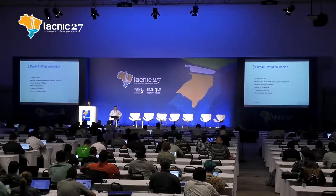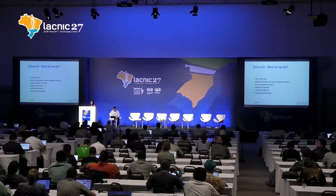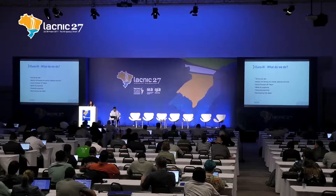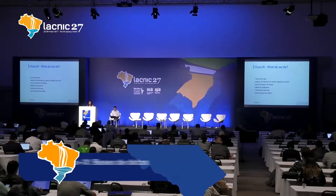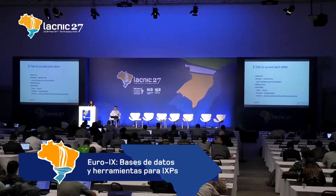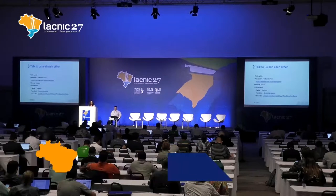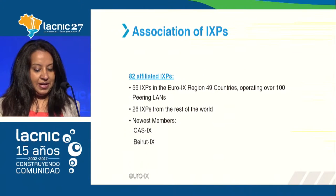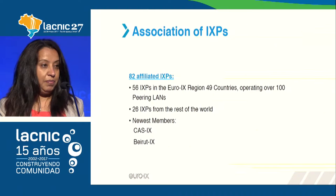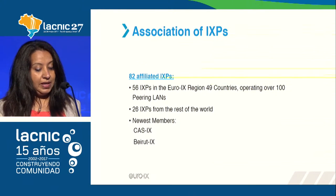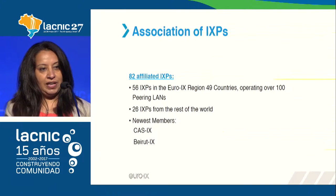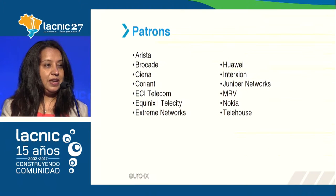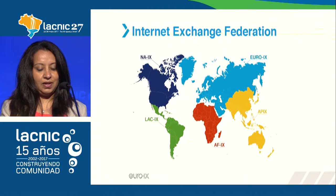We have two forums a year, a website, a database, and some tools which I'm going to talk about later. We also have a report and different programs that can help support and grow internet exchange points around the world. We have a mailing list, newsletters, different working groups, and of course we're on social media. At the moment we have 82 member IXPs — 56 from Europe and 26 from the rest of the world — with newest members from Morocco, Casablanca IX, and Beirut IX in Lebanon. We also have patrons who provide support for the membership.